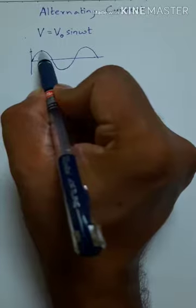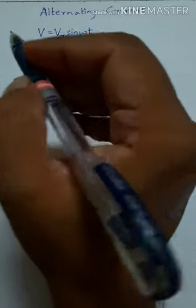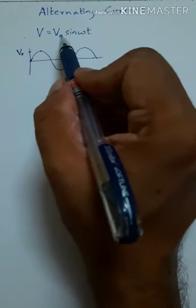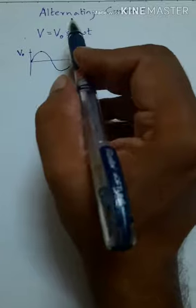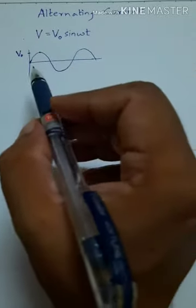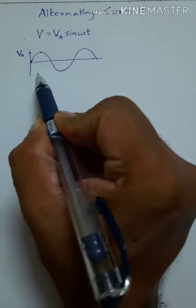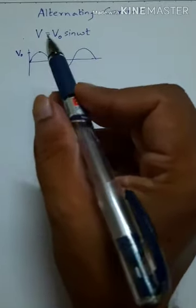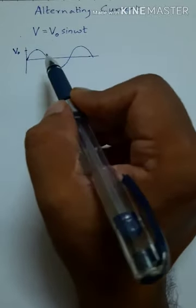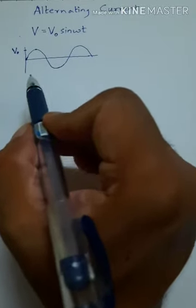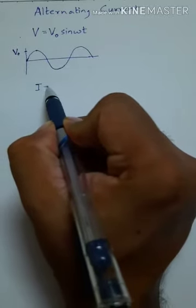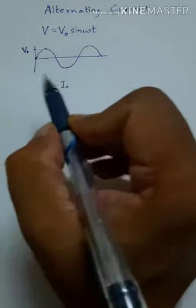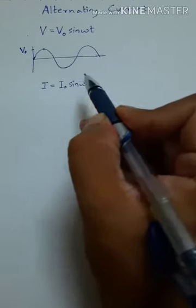This value here is the maximum voltage, which we call V₀. So V = V₀ sin(ωt) is the instantaneous value of the voltage. Now in this chapter, let us start with the alternating current. Just as the voltage is sinusoidal or alternating, the current is also alternating, and therefore the instantaneous formula for alternating current will similarly be given as I = I₀ sin(ωt).